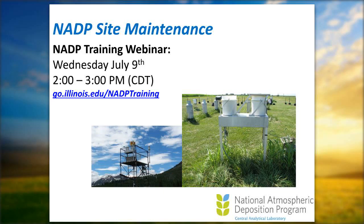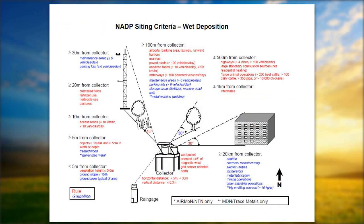When starting a new NADP site, there are rules and regulations that must be met before approval is given to install a rain collection site. All of this is available to download at the end of this webinar. I want to go through the rules and guidelines. One of the first rules is making sure vegetation is less than 0.6 meters — you don't want vegetation growing too high around the collector.